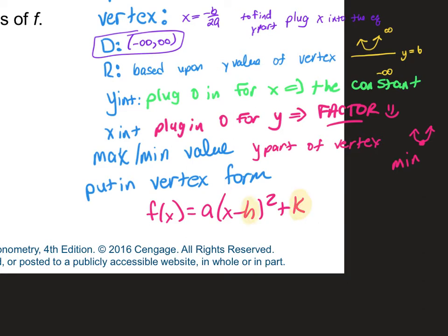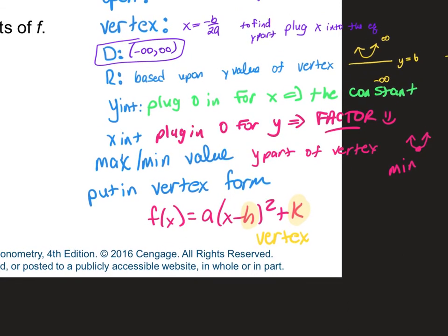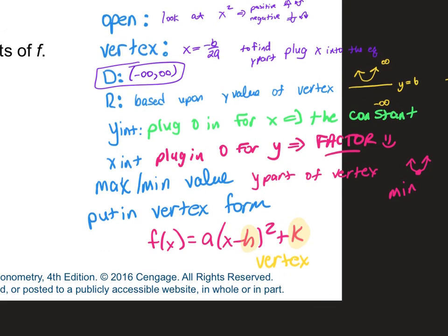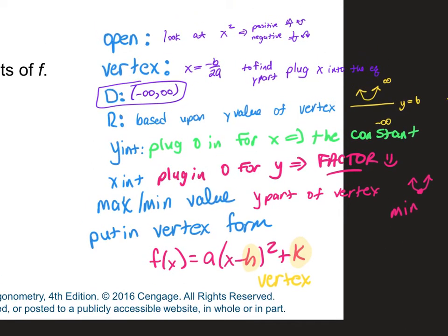Your vertex form is a times (x minus h) squared plus k. The a value you can figure out from your original equation, and h and k are your vertex coordinates. You guys have all seen this before — we'll go through a couple of problems and work through the list, and it will be easier, I promise.